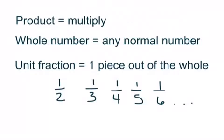A whole number is any normal number, just a normal number, and a unit fraction is one piece out of the whole. So one half, one third, one fourth, one fifth, one sixth, so on and so forth. It's when your numerator is one and the denominator is the same as what the problem is.